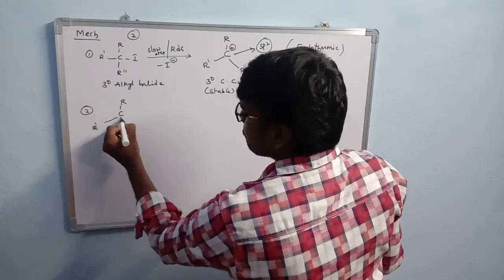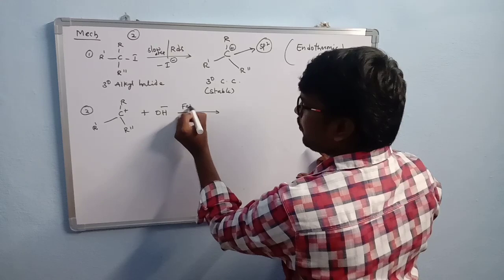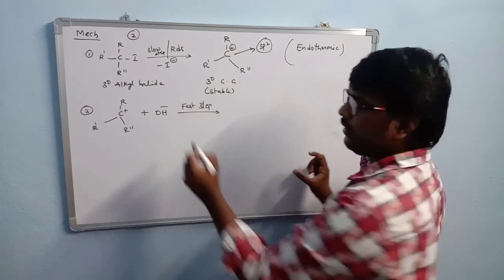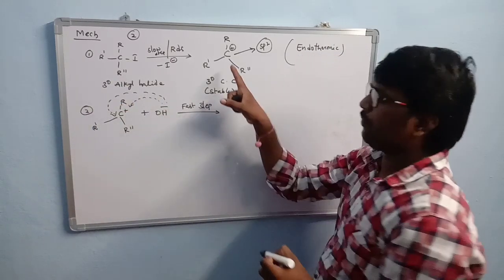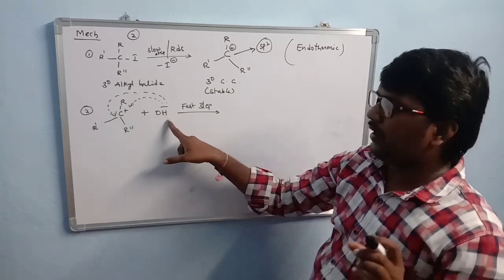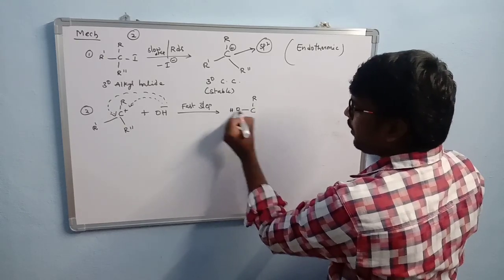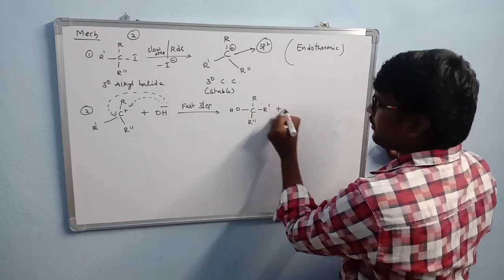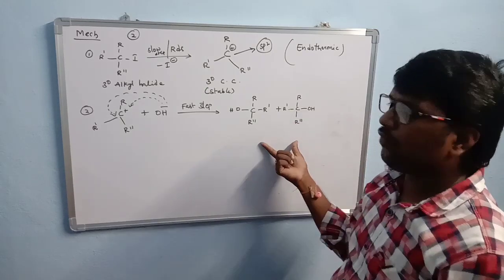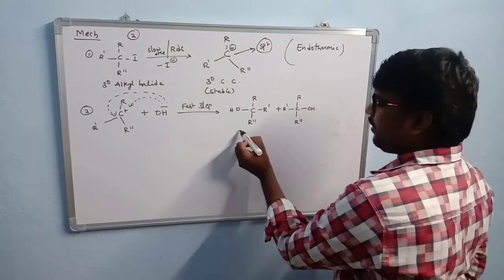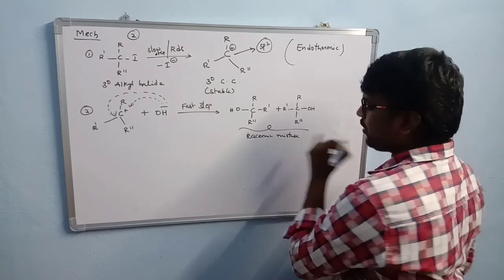In the second step, the carbocation reacts with the nucleophile. Because the carbocation has a planar structure, the nucleophile can attack from the front side or the back side. Front-side attack gives the retention product, and back-side attack gives the inversion product. That's why two products are formed, giving a racemic mixture. This completes the mechanism of SN1 reaction.